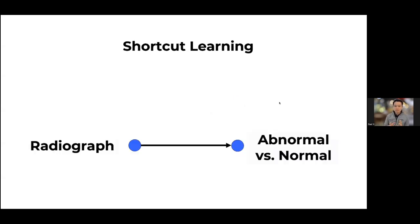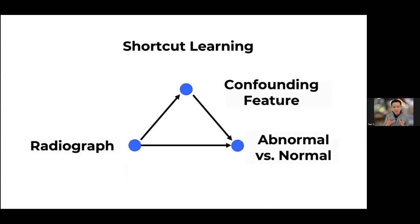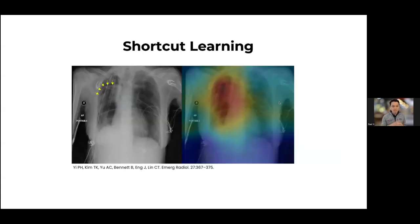This matters because of shortcut learning. We hope a deep learning model takes an input image and predicts abnormalities correctly, but with shortcut learning a confounding feature allows the algorithm to make the correct diagnosis for the wrong reason. A common example is pneumothorax detection: AI algorithms can detect pneumothorax with high accuracy but often use a chest tube as a proxy — chest tubes treat pneumothorax, so seeing one suggests you have it, but it's not the same as identifying the actual disease.